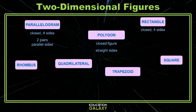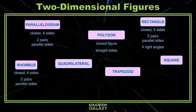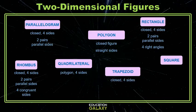A rectangle, closed four-sided figure. Opposite sides are parallel. It has four right angles. A rhombus, also closed four sides, two pairs of parallel sides, and it has four congruent sides. A quadrilateral is just a polygon with four sides. Trapezoid is a four-sided figure, and it has one set of parallel sides.